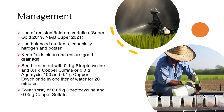How can we manage bacterial blight of rice? There are some resistant varieties that could be used — for example, Super Gold 2019 and NIAB Super 2021. Balanced nutrients, especially nitrogen and potash, could be used for management. Similarly, field sanitation is important and ensuring good drainage in the field could be helpful.